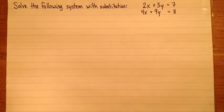Hi! In this video, I'm going to show how to solve a system of equations with substitution, and I'm going to do an example where none of the coefficients are 1. So here we're asked to solve a system of equations with substitution. We have 2x plus 3y equals 7, and 4x plus 9y equals 11.